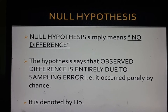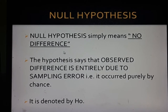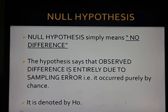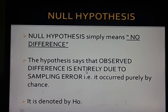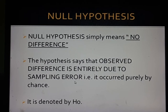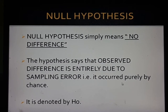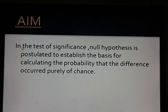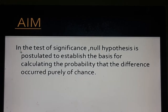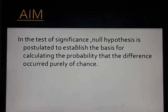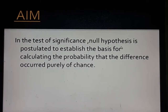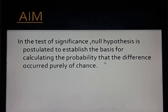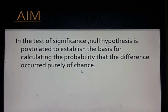Null hypothesis simply means no difference. The hypothesis states that the observed difference is entirely due to sampling error, that is, it occurred purely by chance. It is denoted by H0. The main purpose of null hypothesis is the test of significance. Null hypothesis is postulated to establish the basis for calculating the probability that the difference occurred purely by chance.